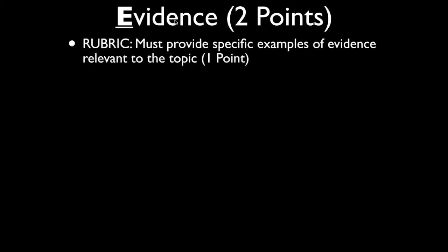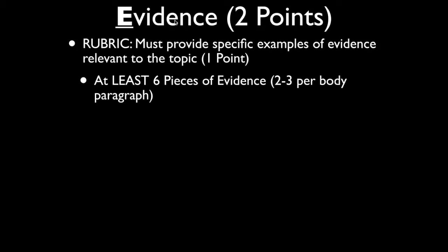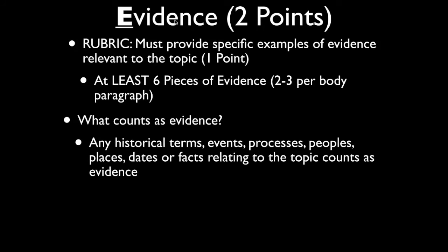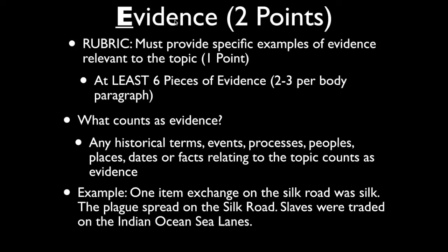The next thing you're going to do is put evidence into your body paragraphs. The rubric says that in order to score a point you must provide specific examples of evidence relevant to the topic. Notice they don't tell you specifically how much evidence to include. For purposes of our class, we'll set the bar at six pieces of specific evidence — about two to three per body paragraph. Evidence can be any historical term: an event, a process, a person, a place, dates, or facts — anything from your notes or textbook that relates to the topic.